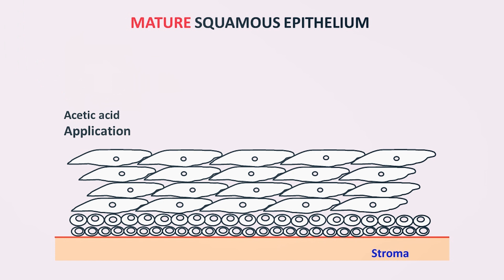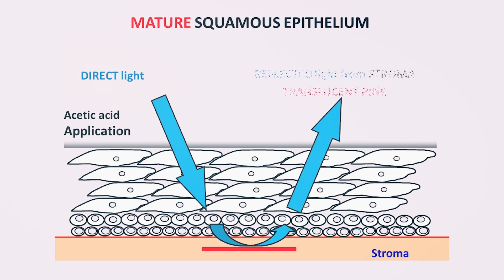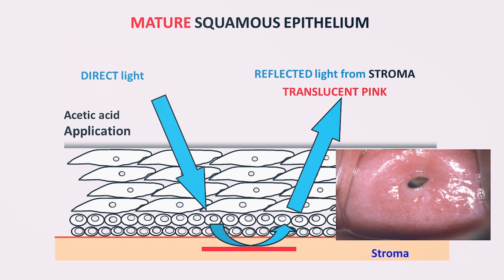This is the mature squamous epithelium, and on this you are going to focus the direct light after applying acetic acid on the surface. When this light touches the epithelium, it goes right through up to the stroma, and the stroma has blood vessels which reflect back the light. You get a translucent pink color — the cervix will look like this — a salmon pink normal epithelium.